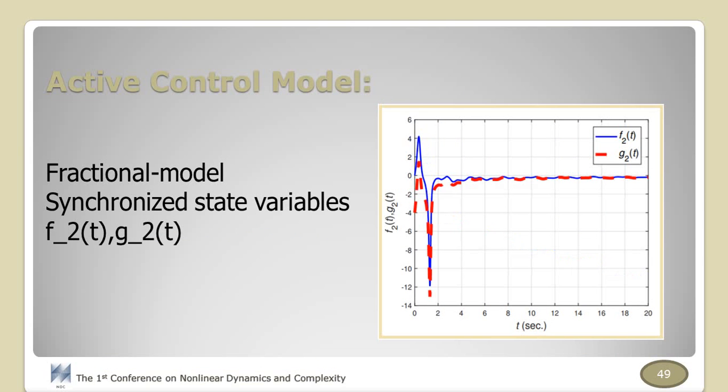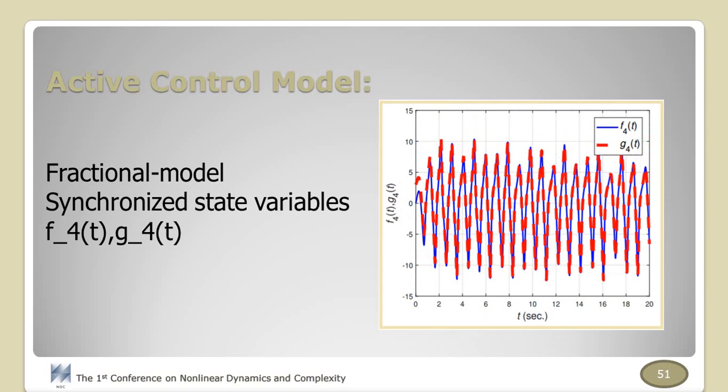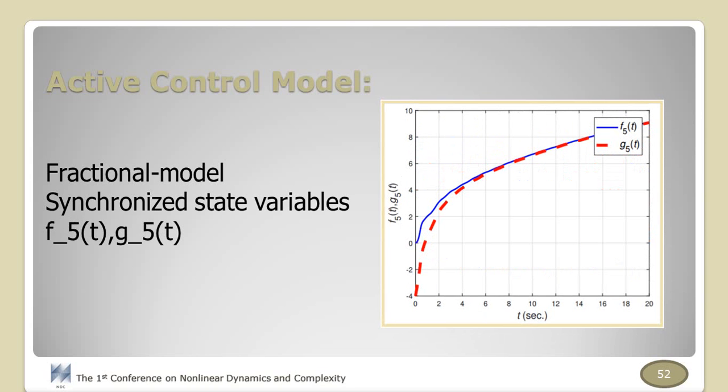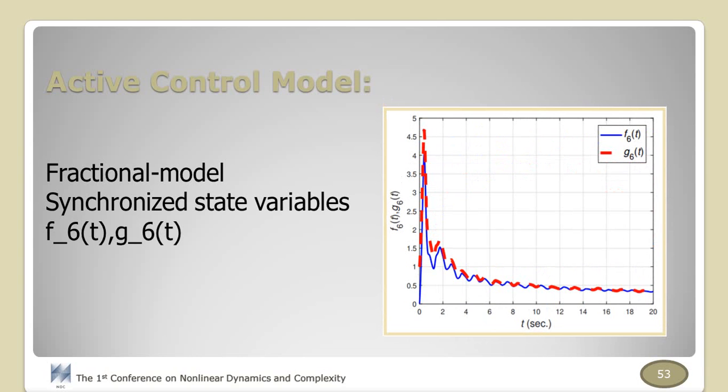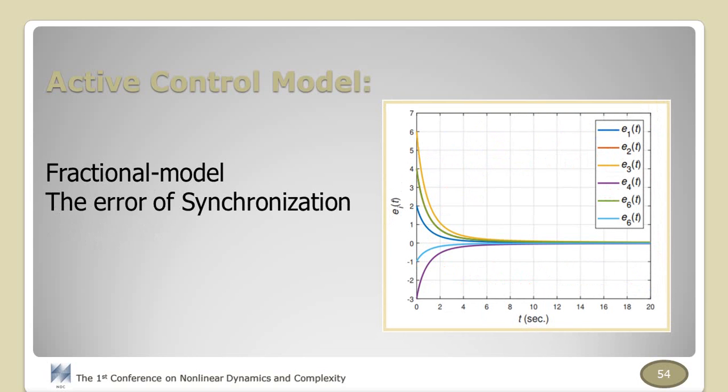Here are the simulation results for all the state variables as shown here: F2 and G2, F3 and G3, F4 and G4, F5 and G5, and finally F6 and G6. And this figure shows the error of synchronization for the fractional order cardiac oscillator. This figure showed that the state variables are properly synchronized and errors converged to zero.